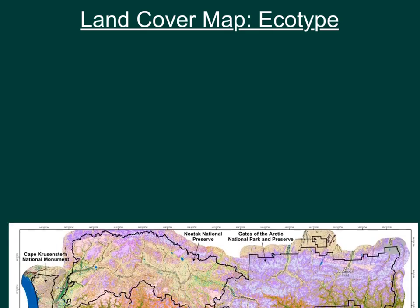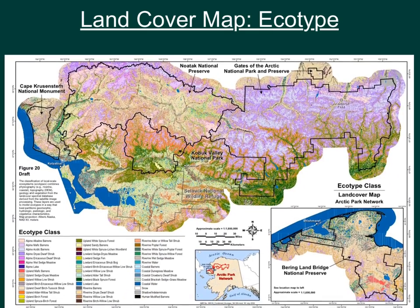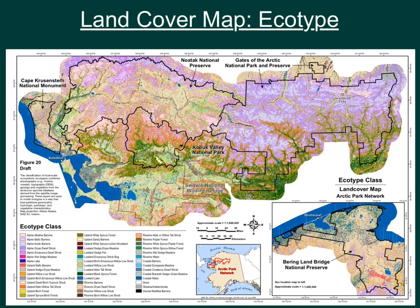Land cover map, or ecotype. From this land cover map, we can observe the diversity and use it to help us decide which areas to preserve. It is important to pick an area that is as diverse as possible so that more species are preserved. An area that is completely one color, for example purple, might not be the best place to preserve. So find an area that has as many colors or species as you can.